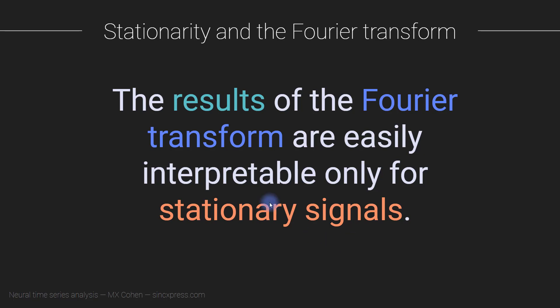I want to be clear about several things regarding this claim. First, there's a distinction between the Fourier transform being a valid, correct, accurate operation and the results — in particular the amplitude spectrum or power spectrum — being easily visually interpretable. The Fourier transform is always a perfect, valid transformation. It always works, it's always a brilliant procedure, regardless of whether the signal is sinusoidal, rhythmic, or square-shaped.